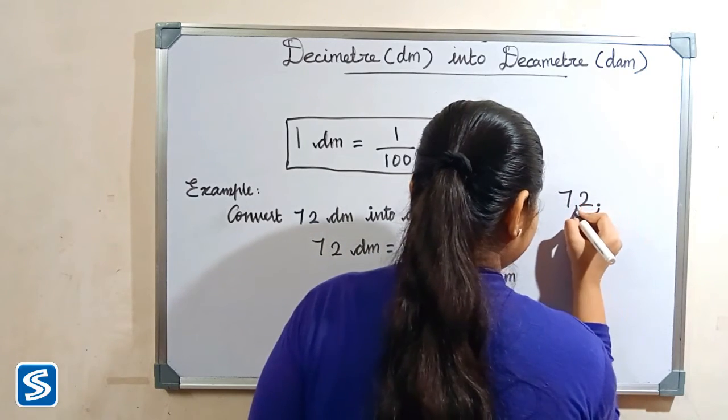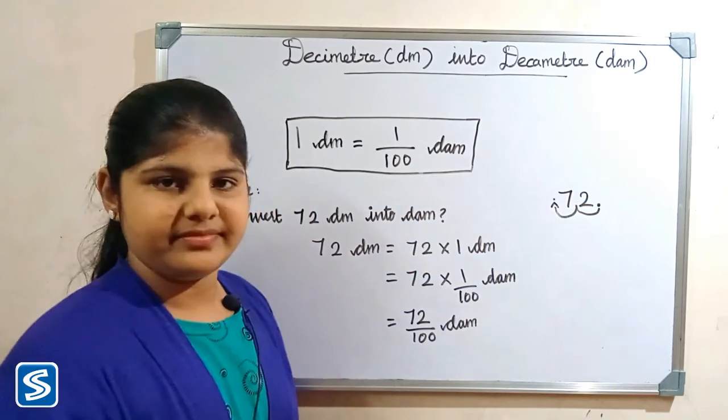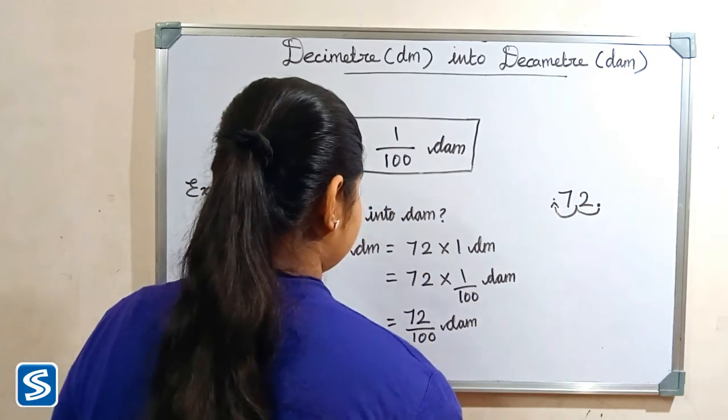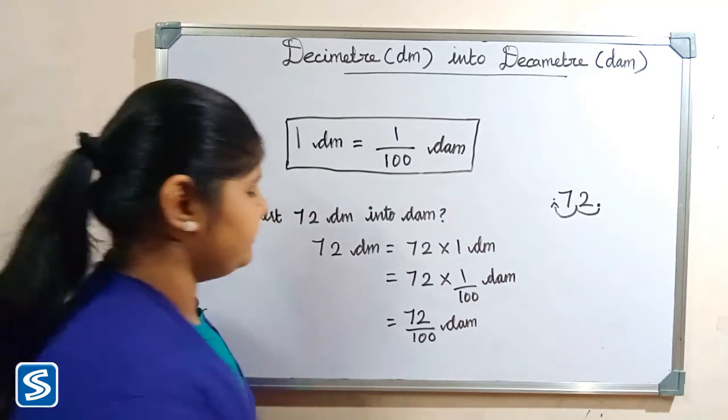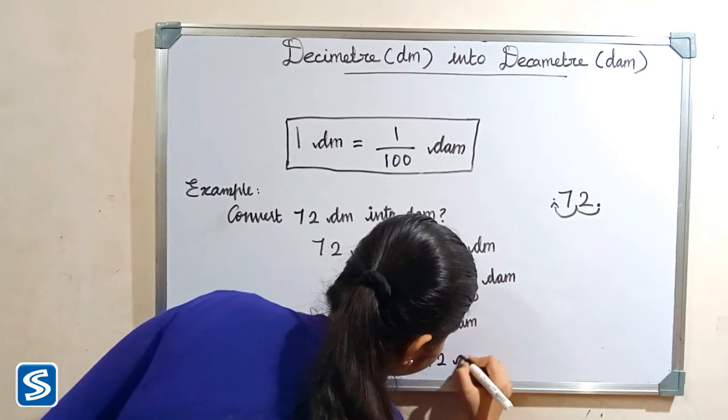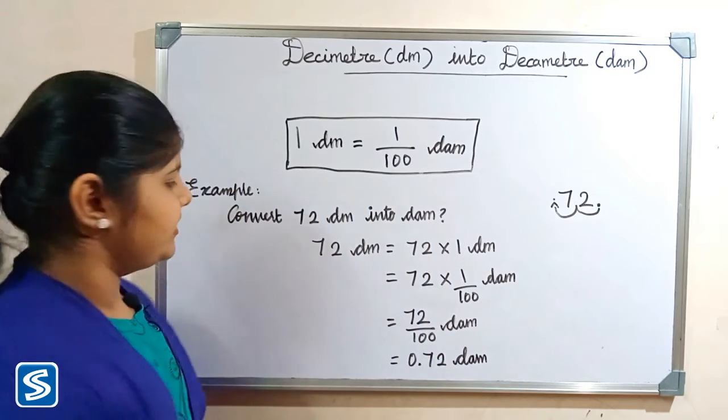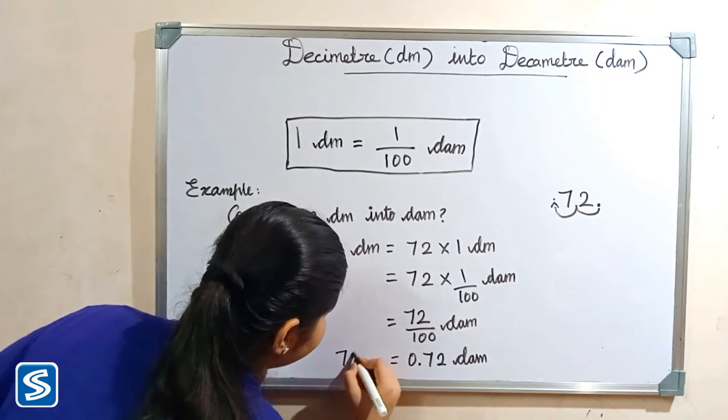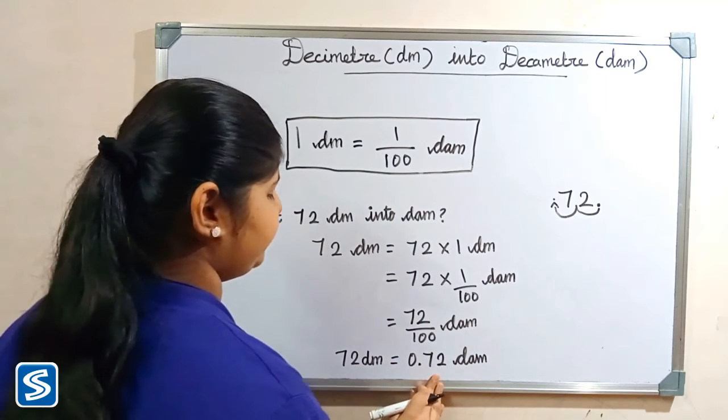So 1 by 100 decameter. When we divide 72 by 100 our answer will be 0.72 decameter. So 72 decimeter is equal to 0.72 decameter.